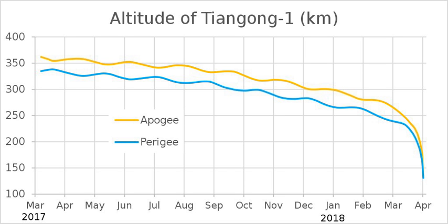Atmospheric drag at orbital altitude is caused by frequent collisions of gas molecules with the satellite. It is the major cause of orbital decay for satellites in low Earth orbit. It results in the reduction in the altitude of a satellite's orbit. For the case of Earth, atmospheric drag resulting in satellite re-entry can be described by the following sequence.